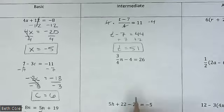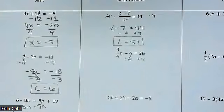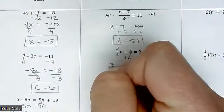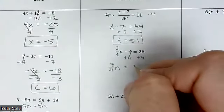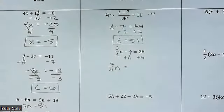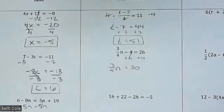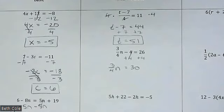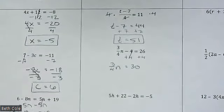For this one, first step would be plus 4, plus 4. So that's going to give you 3/4 n equals 30. Good. Are you okay, everyone? Now, whenever you have a fraction, you multiply by the reciprocal.